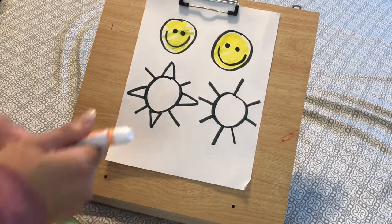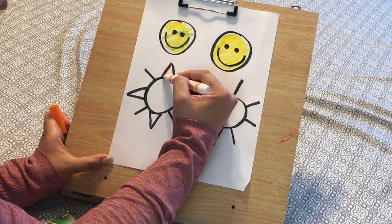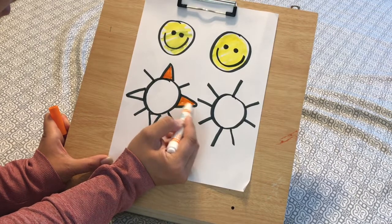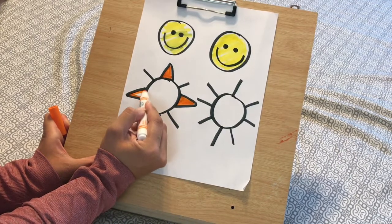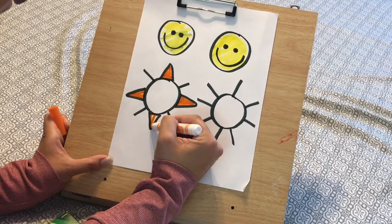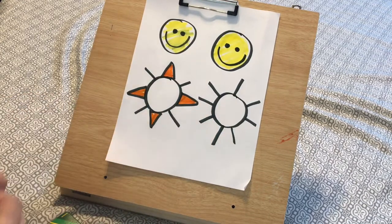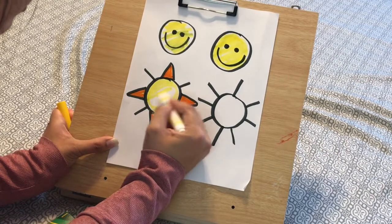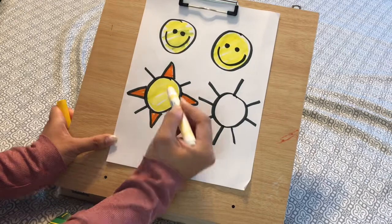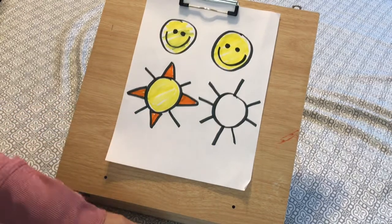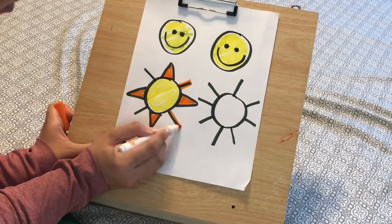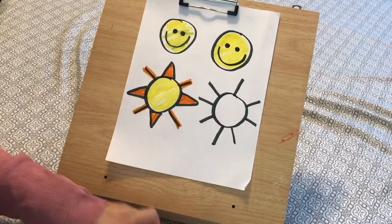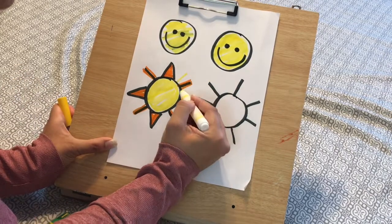I'm gonna do orange rays on my triangles, yellow inside. You can also add a little bit more orange on the outside and some yellow. Add whatever you like.